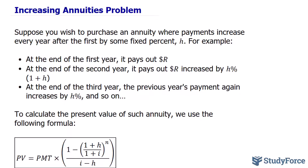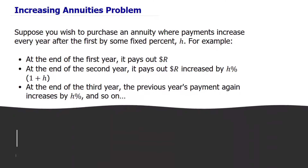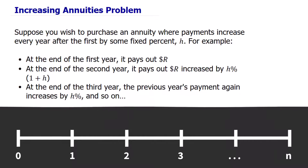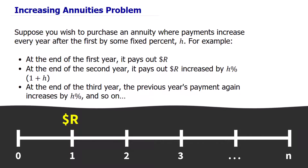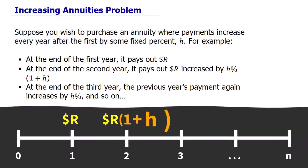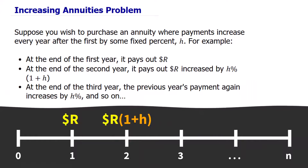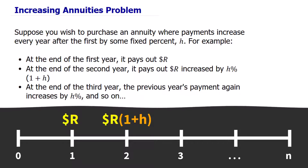Suppose you wish to purchase an annuity where payments increase every year after the first by some fixed percent H. For example, at the end of the first year it pays out A dollars. At the end of the second year, it pays out A dollars increased by H percent, which mathematically translates to a factor of 1 plus H.